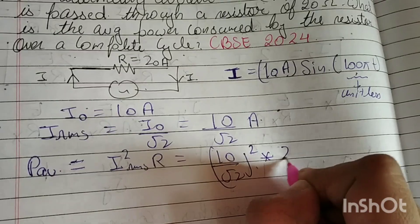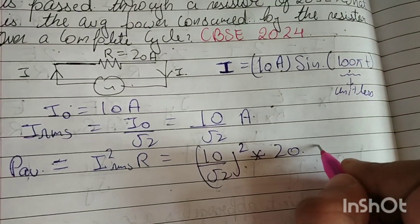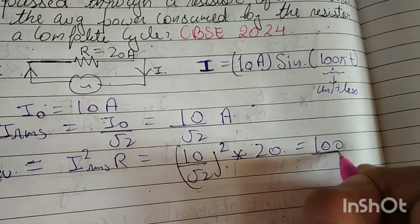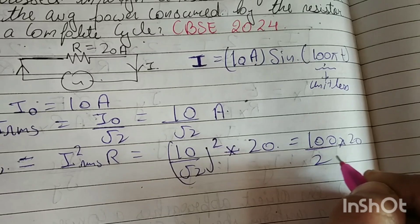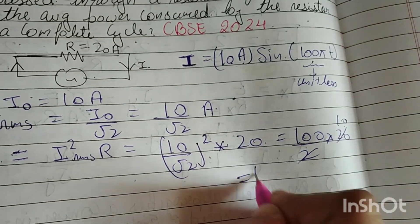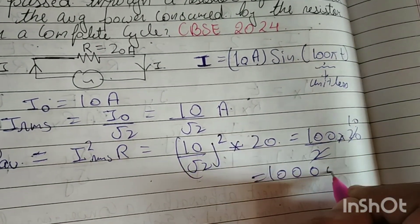If you calculate this, it will be 100 divided by 2 into 20, so two ones are cancelled. 10 times 20 is how much? 1000 watts.